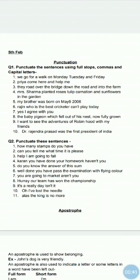The first sentence: we go for a walk on Monday, Tuesday and Friday. Please correct the sentence — it should be: we go for a walk on Mondays, Tuesdays and Fridays. The 's' is not written here but it should be. 'We' — W should be capital. After 'walk' there will be a comma, on Mondays, Tuesdays and Fridays, you have to put 's', and at the end you have to put the full stop.